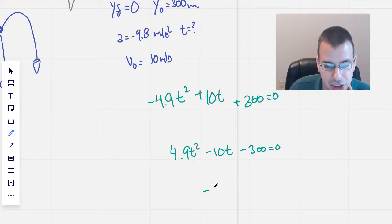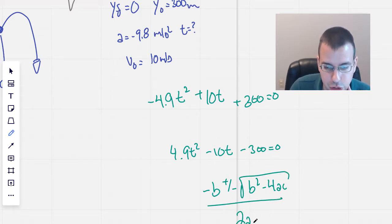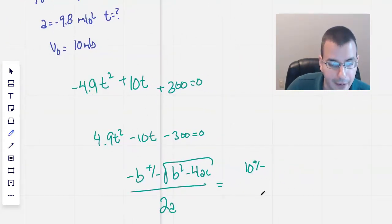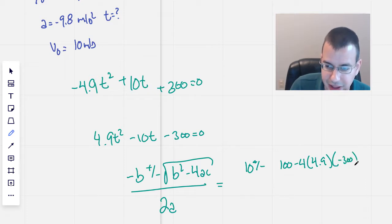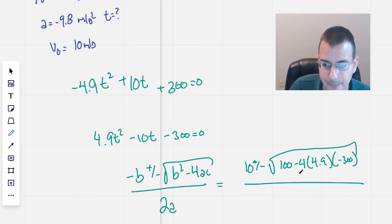So now we're going to do the quadratic equation. Negative b plus or minus b squared minus 4ac square rooted all over 2a, which is 10 plus or minus b squared, which is 100 minus 4 times 4.9 times negative 300. And that negative 300 will then give us a positive number overall, all over 2 times a. So I'm going to call this 9.8.